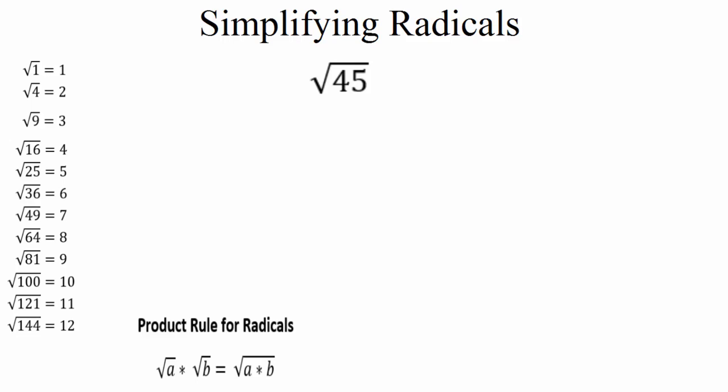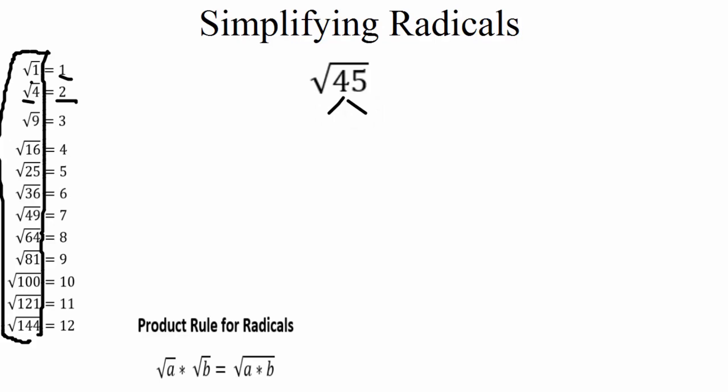The way we break them apart depends on how numbers factor. For example, 24 could be 2 times 12 or 4 times 6. To know which combination to use, I've listed the first 12 perfect squares on the left side of the screen. I highly suggest memorizing this list. When working with a number under a radical, we want to start from the bottom of the list — the bigger perfect squares — and work our way up to find one that fits into our given number.